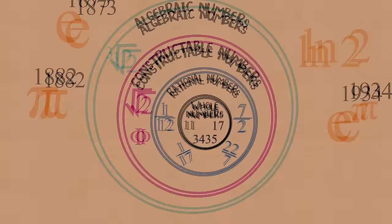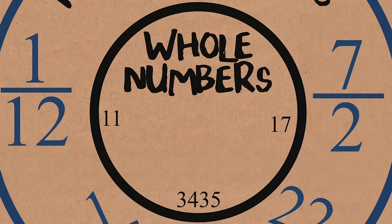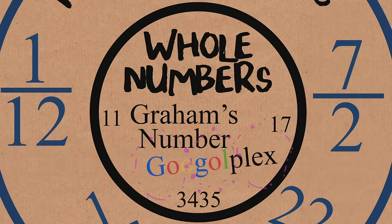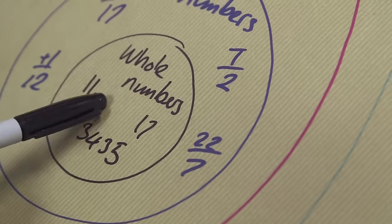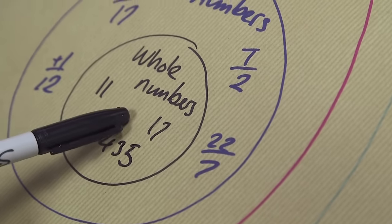If you look at the entry for transcendental numbers on Wikipedia, or Math World, there's a list. Here's the only ones we know, and that's it. Some of our favorite big old numbers. Graham's number, in here. Googleplex, in here. Whole numbers, doesn't matter how big it is, it's in there.